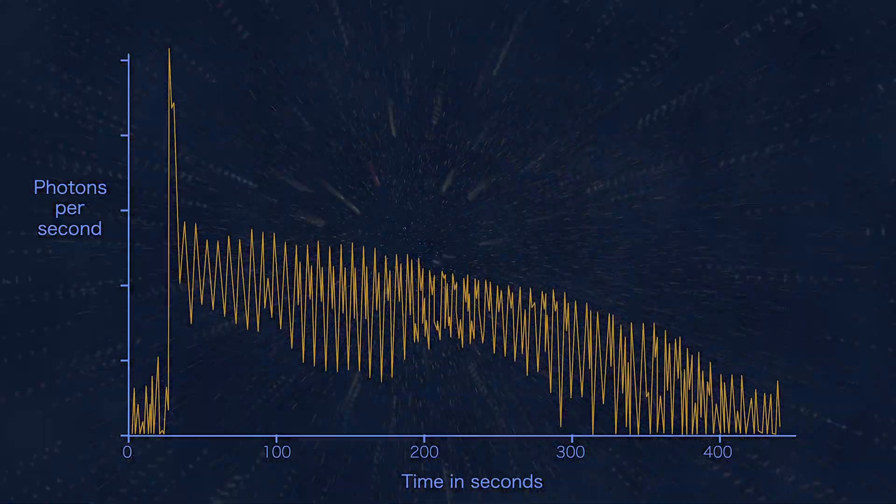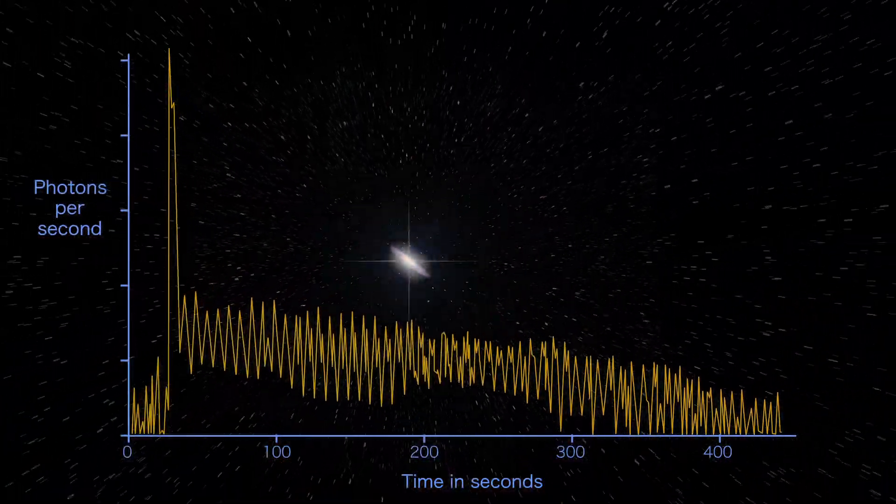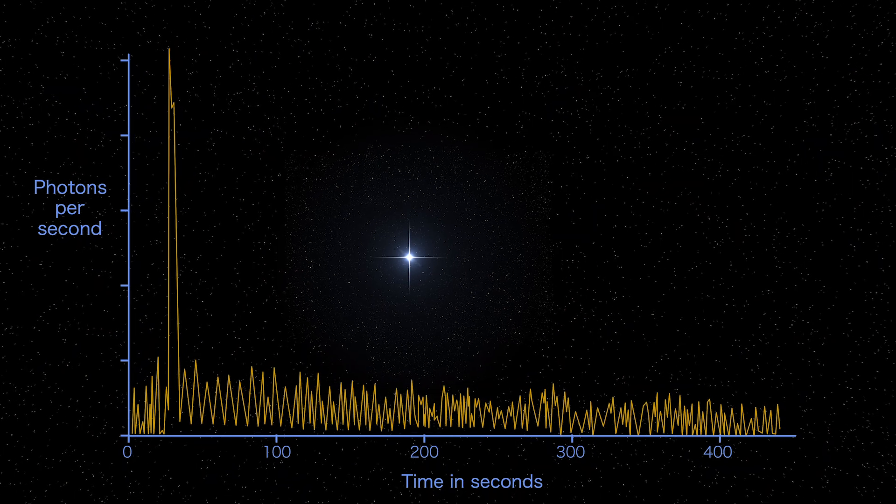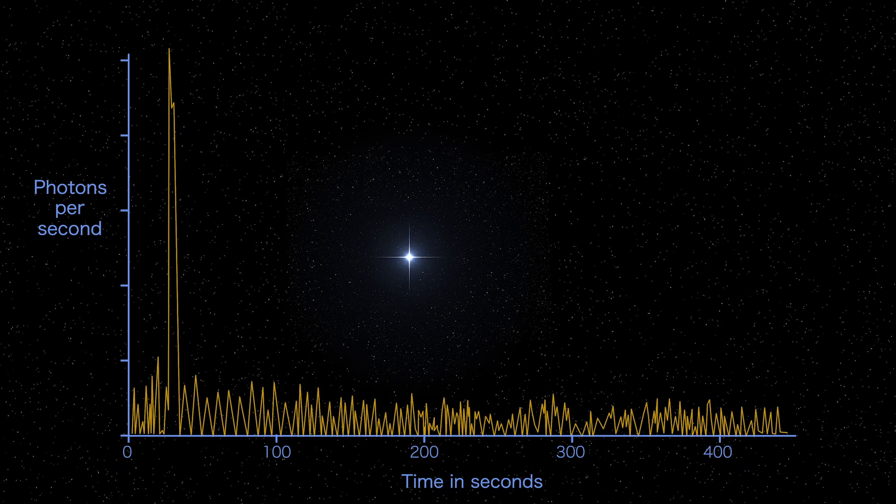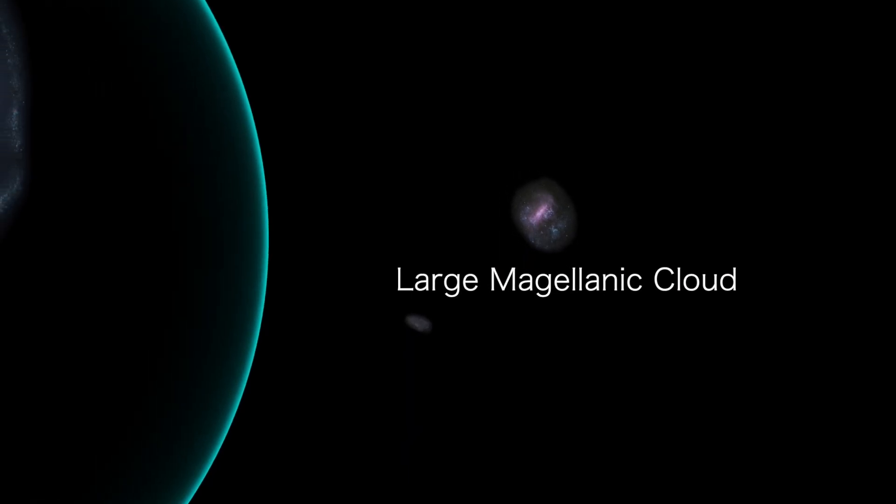Current instruments can't detect this feature in flares located at great distances. But other characteristics, such as their extremely fast rise in brightness, are unmatched by short GRBs.